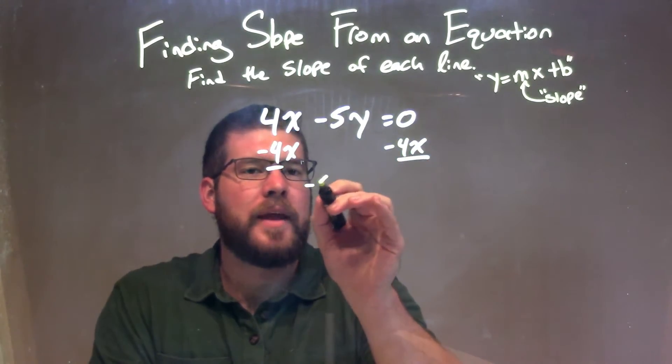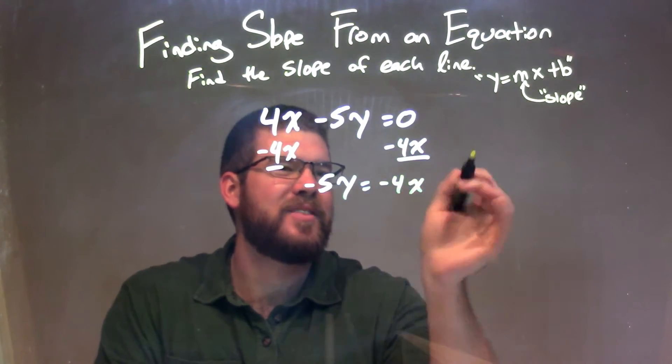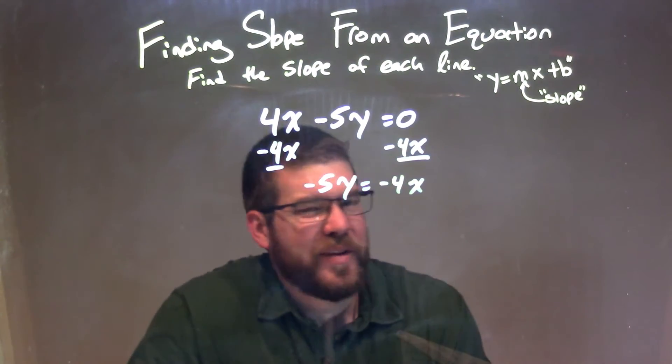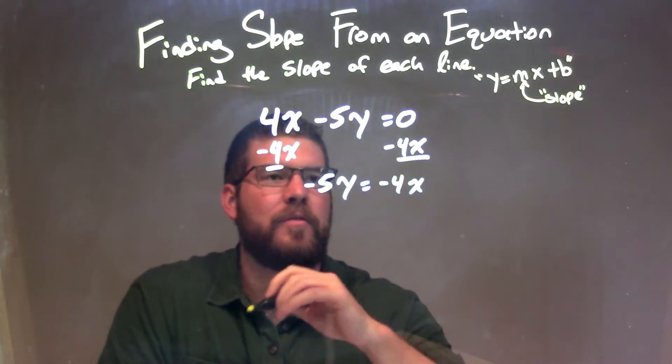And doing that, I'm left with negative 5y equals negative 4x plus 0, which is that plus 0 I don't really need to write. I don't really worry about that. So we just have negative 5y equals negative 4x.